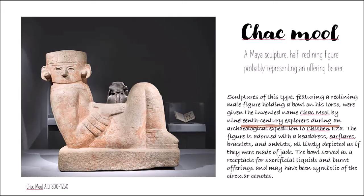Our second vocabulary word is Chakmul. This is a Mayan sculpture of a half-reclining figure, probably representing an offering bearer. You might see this at the base of structures or on top of them. Sculptures of this type feature a reclining male figure holding a bowl on his torso, and were given the invented name Chakmul by a 19th century explorer during an archaeological expedition to Chichen Itza. The figure is adorned with headdress, ear flares, bracelets, anklets, and all likely depicted as if they were made of jade.